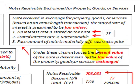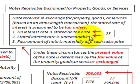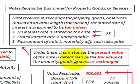Going back to our rules: when trying to determine the interest rate on a note that's not readily tradable or is exchanged for property, goods, and services — if we don't know the interest rate or the stated rate is not determinable, or the stated interest rate is unreasonable, or the face amount is materially different than the cash sales price — under these circumstances, the present value of the note is determined by the fair value of the property, goods, or services exchanged.